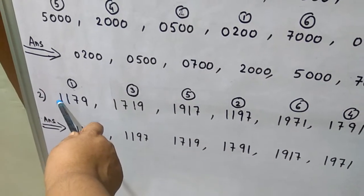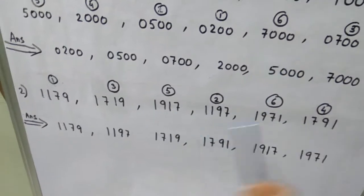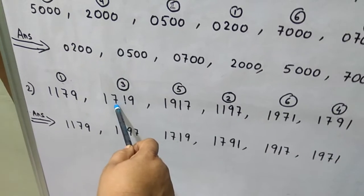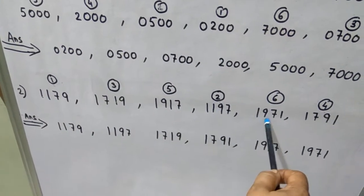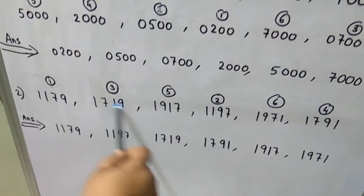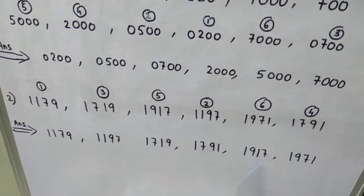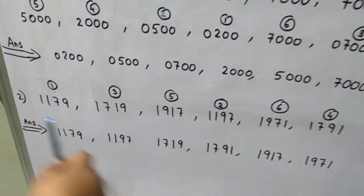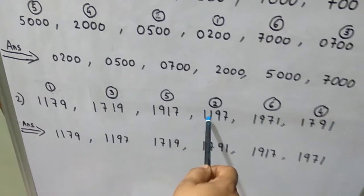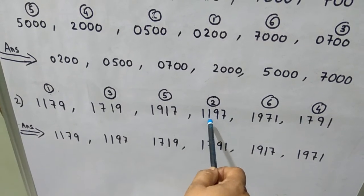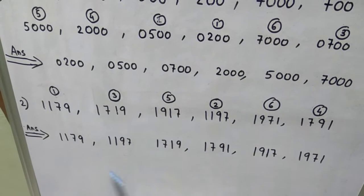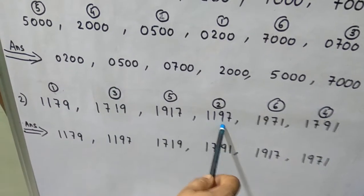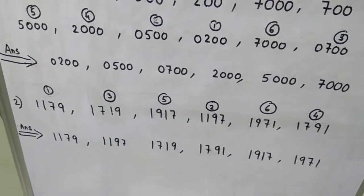Now see the 1000s place — all are 1, so you have to look at the 100s place. The 100s digits are: 1, 7, 9, 1, 9, 7. Which is smallest? 1 — but there are two 1s: in 1179 and 1197. When the 100s place is the same, look at the 10s place. For 1179 it is 7, and for 1197 it is 9. So 1179 gets rank 1 and 1197 gets rank 2.